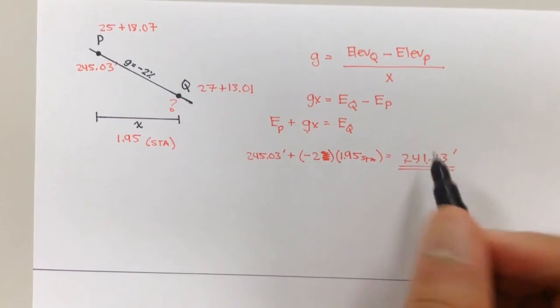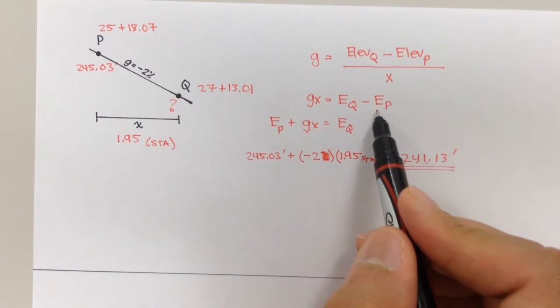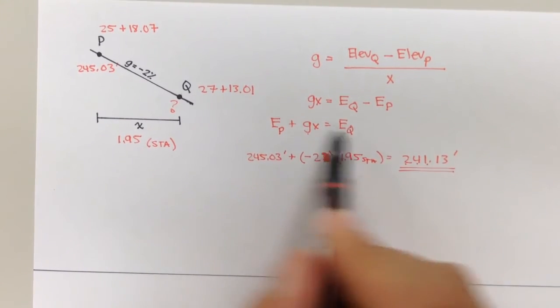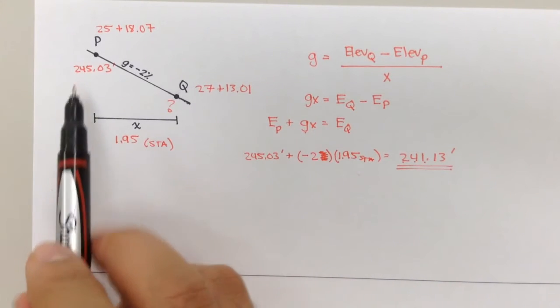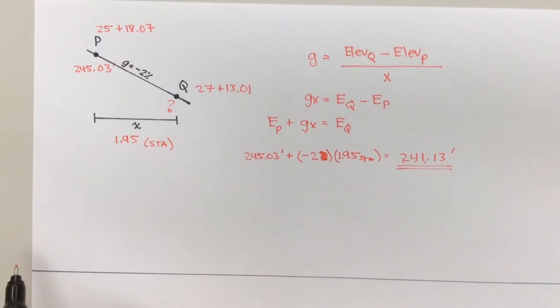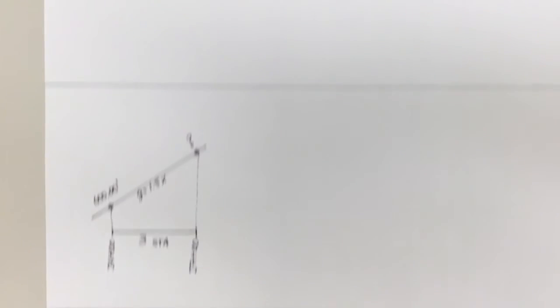All right, so that's, I derived the quick way to figure out what the elevations are, given certain values, such as grade, and at least one elevation, and the distance. All right, so let's move on to the second example. It's going to be pretty quick.